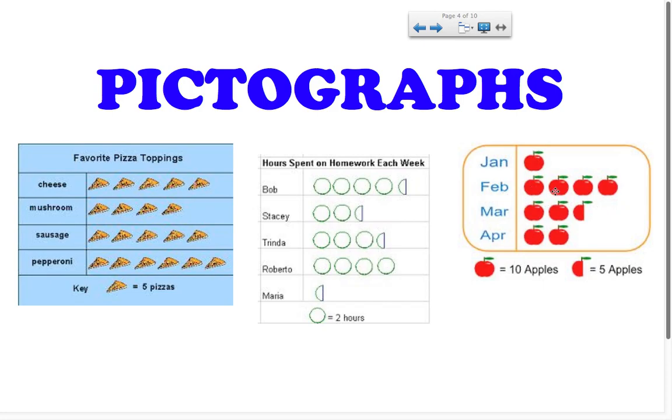So, here in February, we have ten, twenty, thirty, forty. And in March, we have ten, twenty, and remember, five. So, twenty-five apples. Pictographs are easy because they use pictures rather than the numbers or bars or the line graphs that we've been using before. Remember, the most important part of the pictograph is always the key.